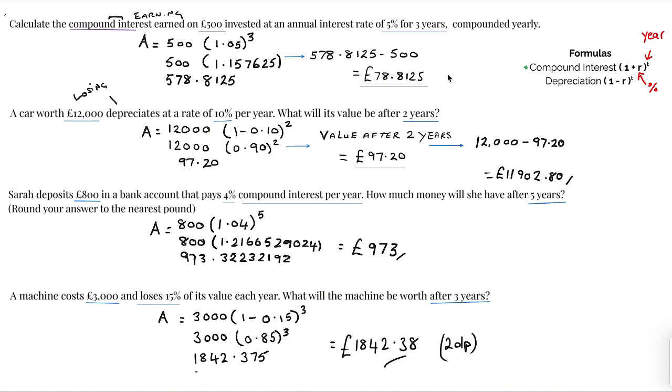Using what we know, this is a compound interest question so we're going to be adding. The amount that we're looking for, I'll just use it as A equals what we've got in the question which is 500, and then we have five percent over three years.